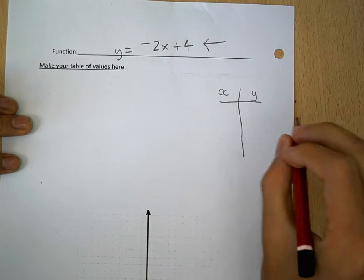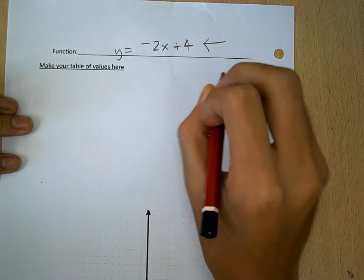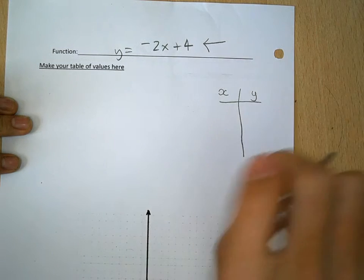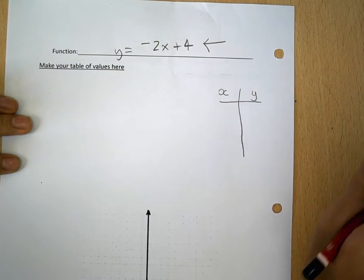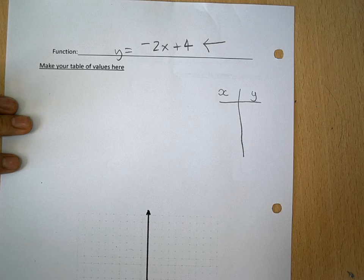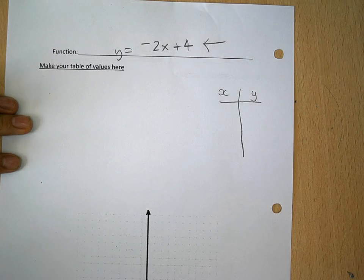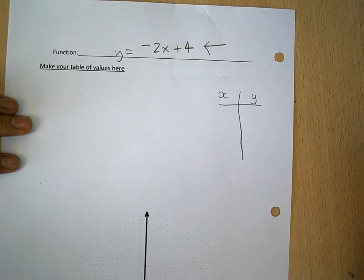You see the minus 2x, so you usually try numbers that are easier to work with. x can usually be 0, 1, 2, 3, or negative 1, negative 2, negative 3. That will usually give you easier answers.